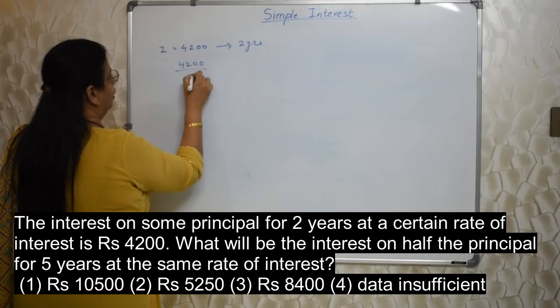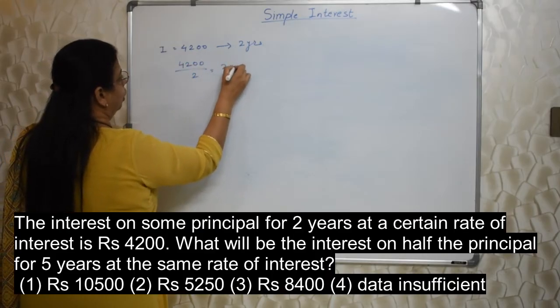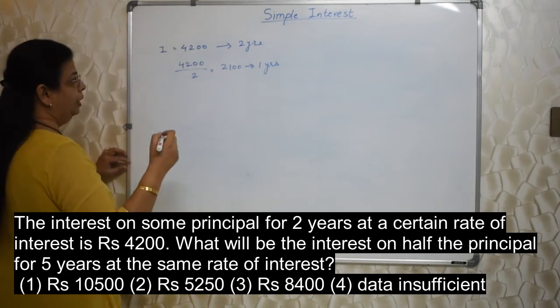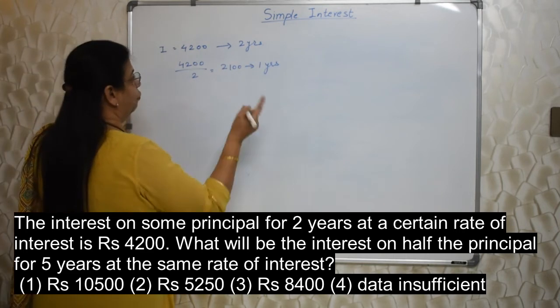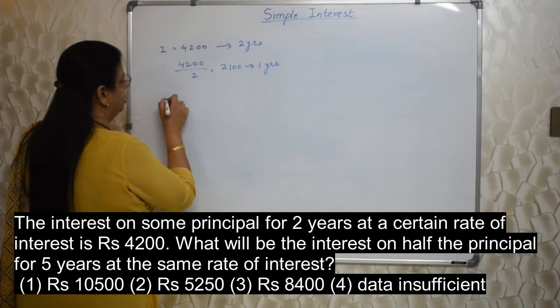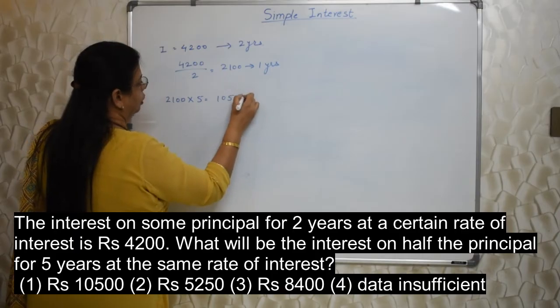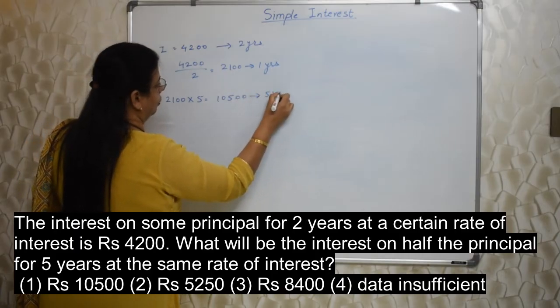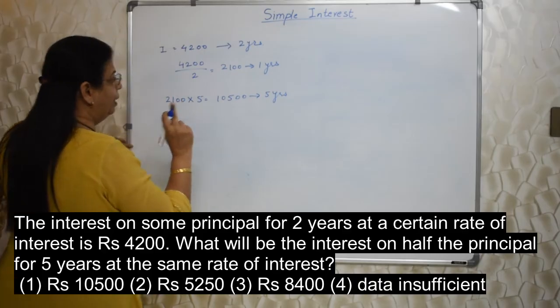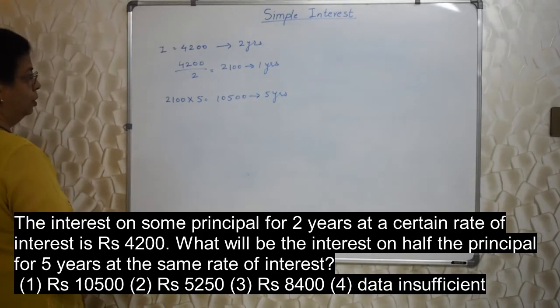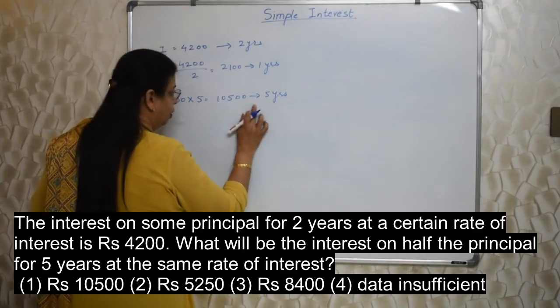How to do that? 4,200 divided by 2, that is 2,100 for 1 year. Now how much period they are asking? 5 years. From 1 year how to find out for 5 years? Multiply by 5. This is for 5 years. Isn't it? This option may be there as one of the option. Please don't choose because this is the wrong answer.